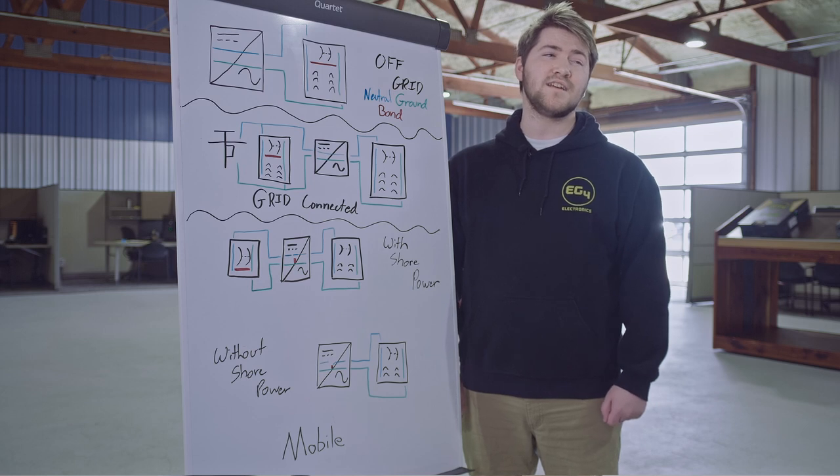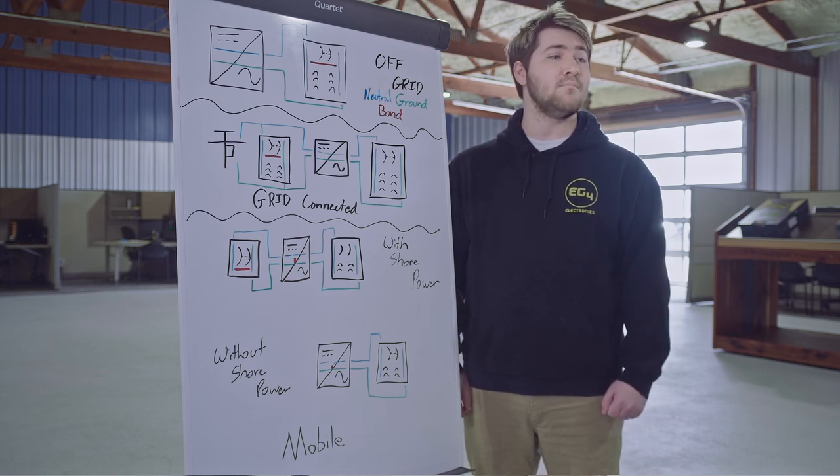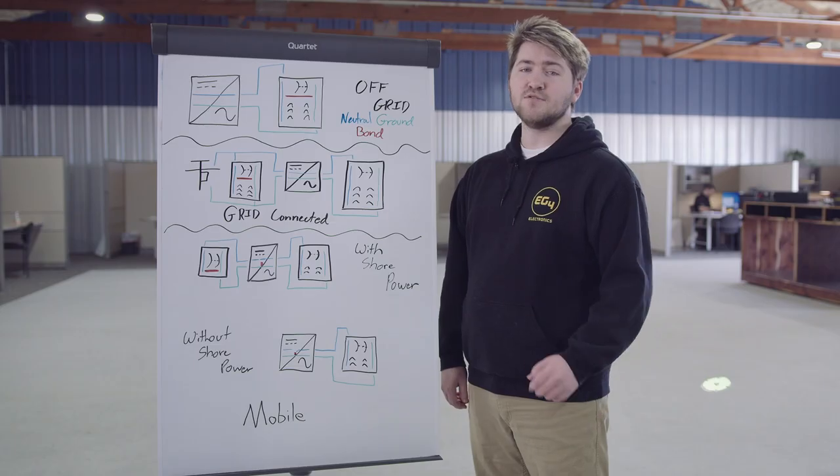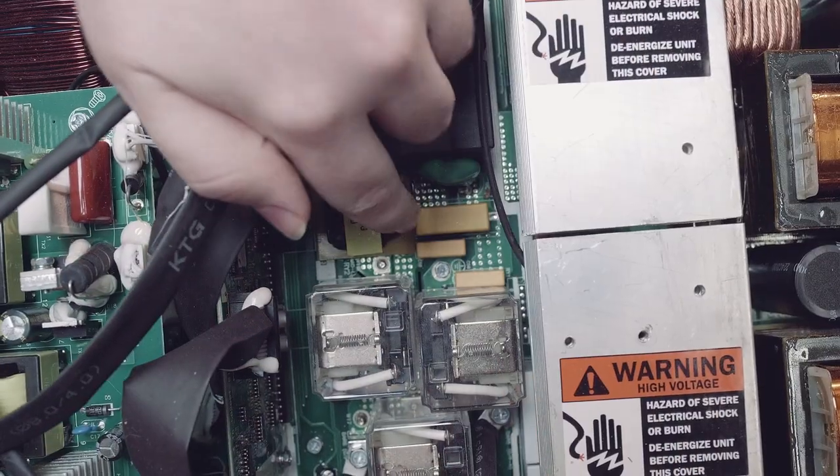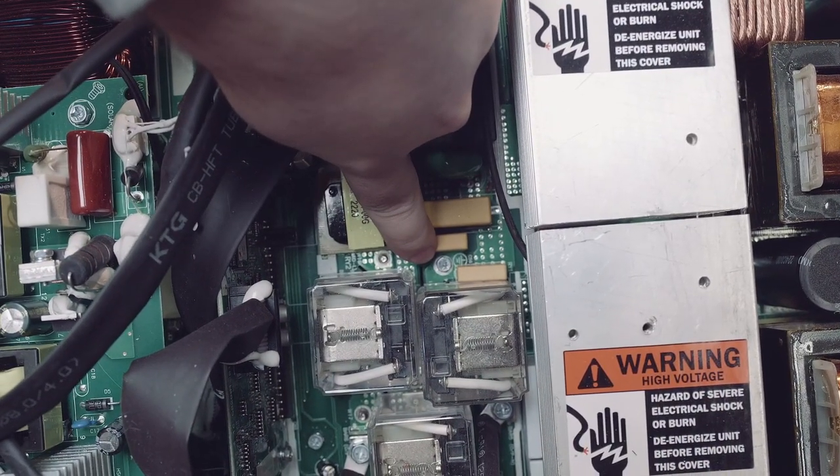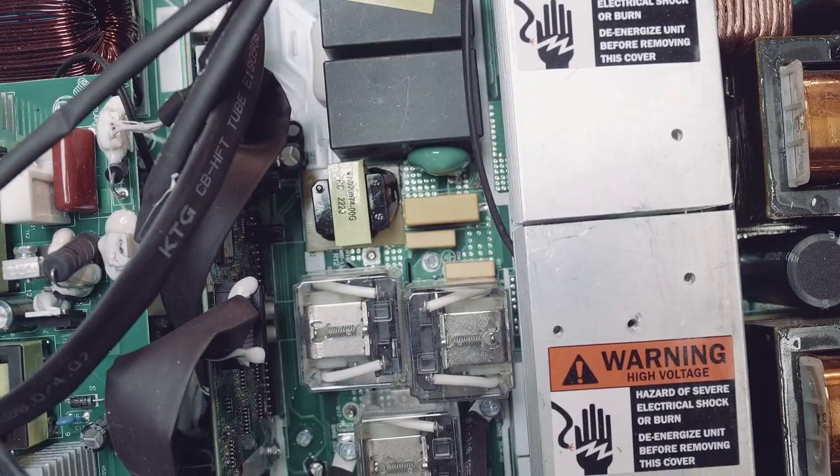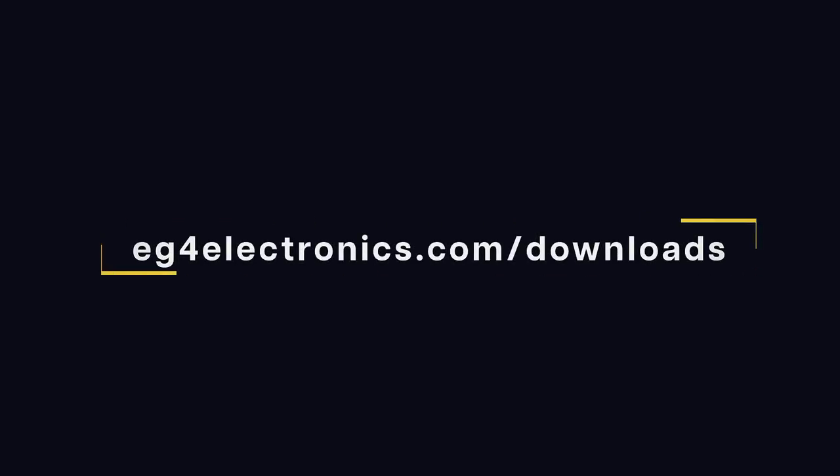Since this is a slightly less common use case for our inverters, we decided it was best to have it run on a relayless firmware, but we have a separate firmware that keeps this relay function active. To use it, all you'll need to do is ensure that you have the bonding screw, which is an M2.5x10mm mounted like so, and install our mobile firmware available at eg4electronics.com slash downloads.